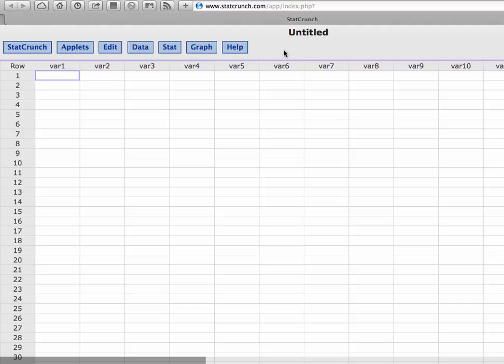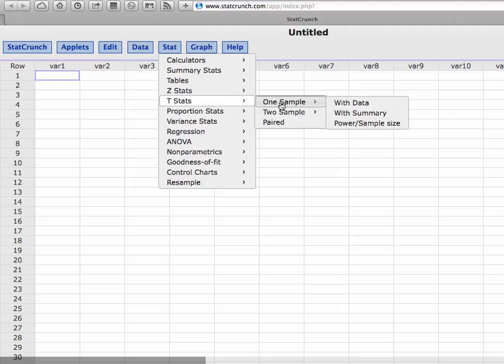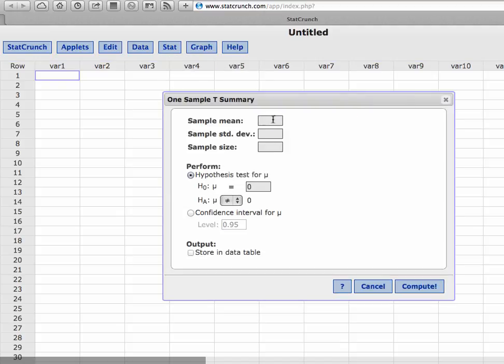Plugging this information into StatCrunch is quite easy. We're still in the stat menu, just like when we were looking at the proportion in z-stats, but now we're looking at t-stats, the t-distribution because we don't know the population standard deviation. We're looking at one sample with summary. That means we're not looking at columns of data. We have the sample mean. We have the sample standard deviation. Our sample mean was 145,580. The sample standard deviation was 13,200. Our sample size was 40.